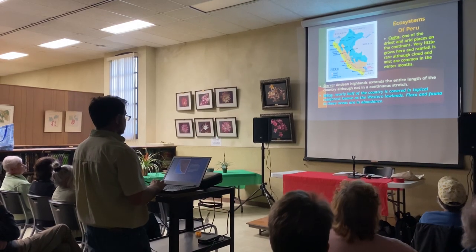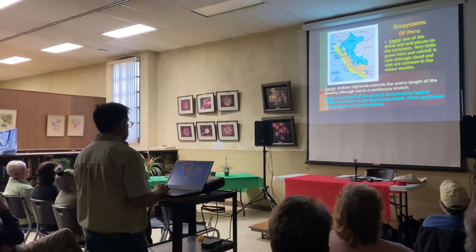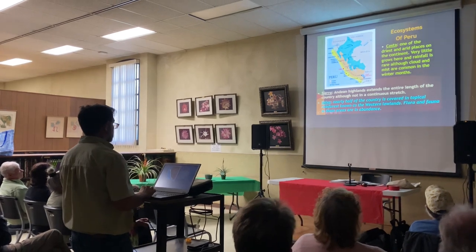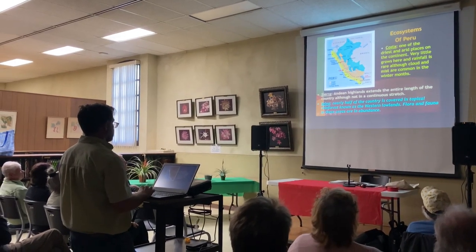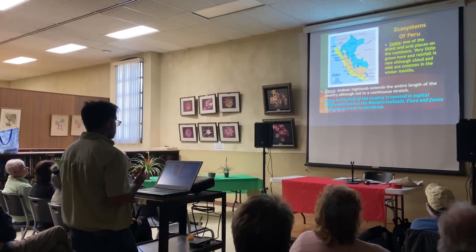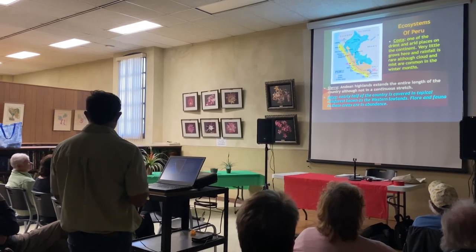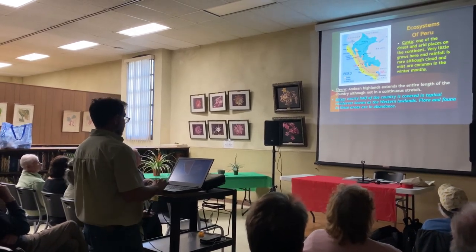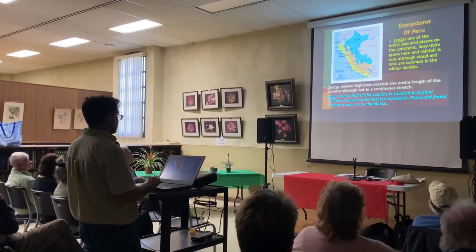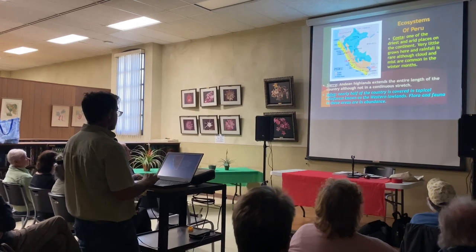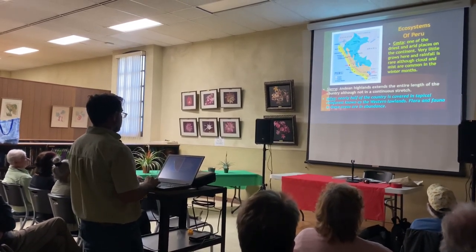Very briefly, I'm going to describe three main ecosystems in Peru. You have the coastal zone, which is in yellow — basically like California, kind of like a desert with low rain. They have a little bit of fog but not much vegetation.